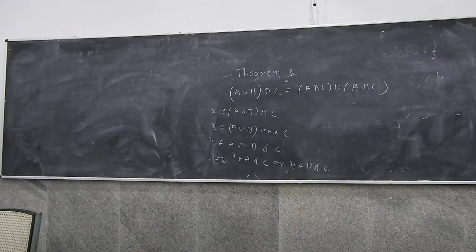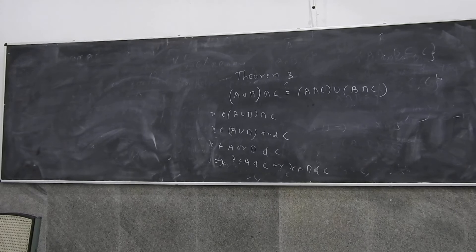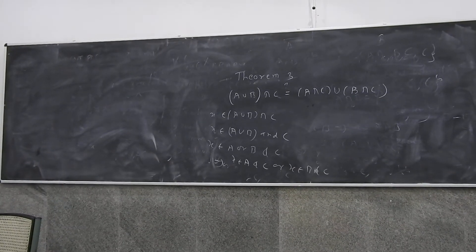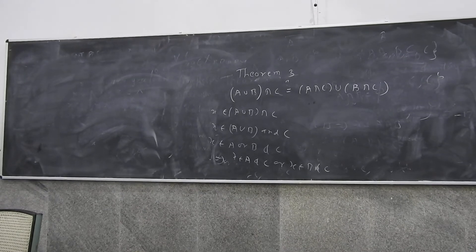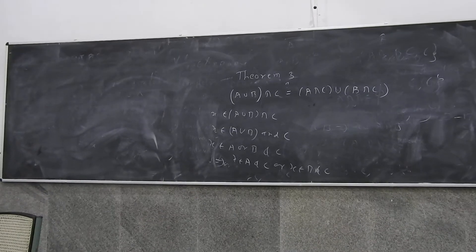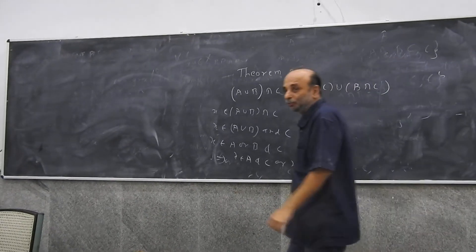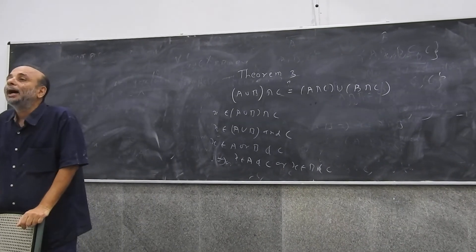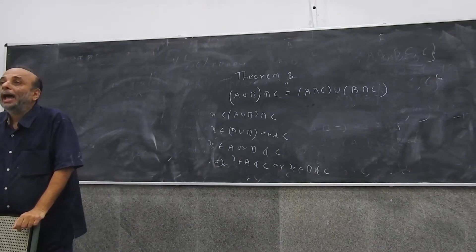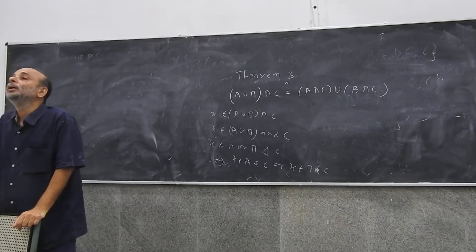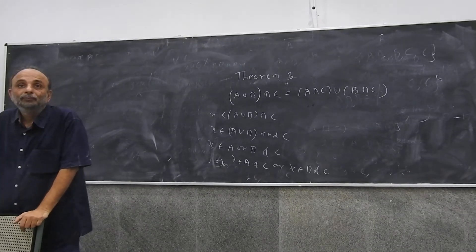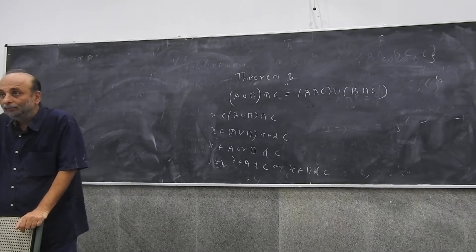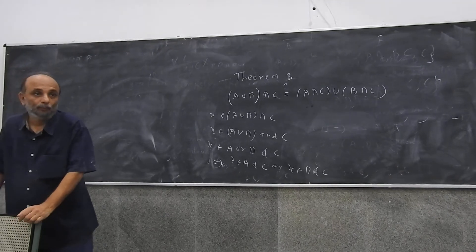The properties we have studied so far are called distributive and associative properties. It is homework to find out which of these properties are called distributive properties and which are called associative properties.